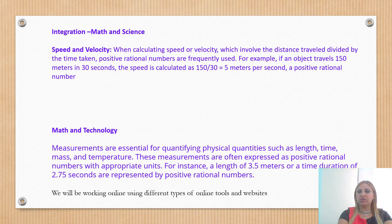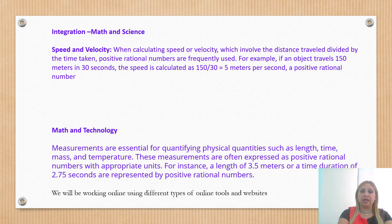This is our integration part. We are going to integrate math and science. We will learn how to find speed and velocity. When calculating a speed or velocity, which involves the distance traveled divided by the time taken, positive rational numbers are frequently used. For example, if an object travels 150 meters in 30 seconds, the speed is calculated as 150 divided by 30, which is 5 meters per second. Of course, we will learn more about this during the unit.